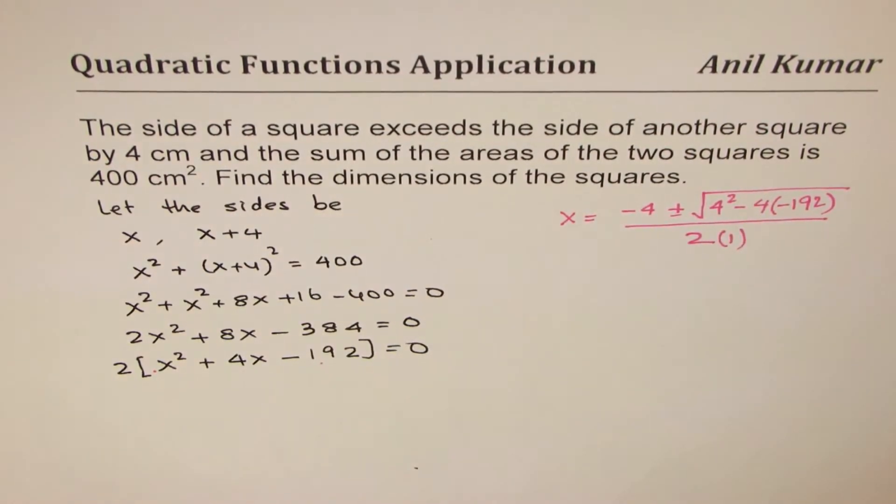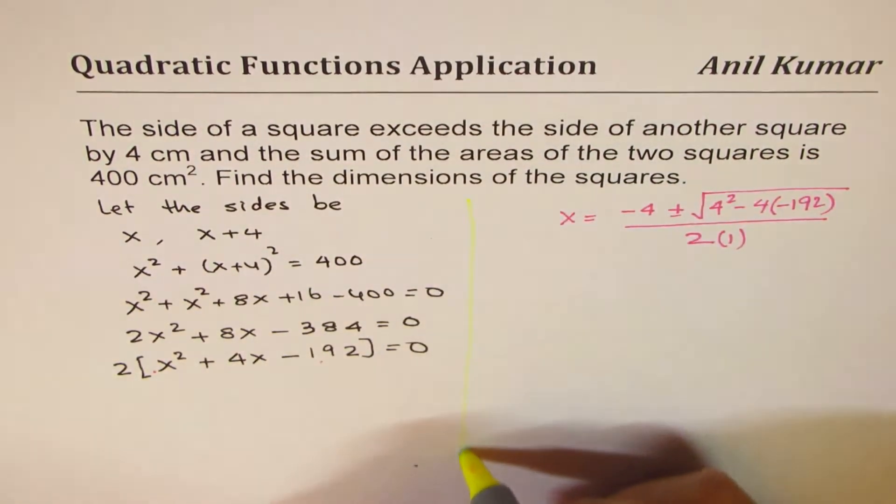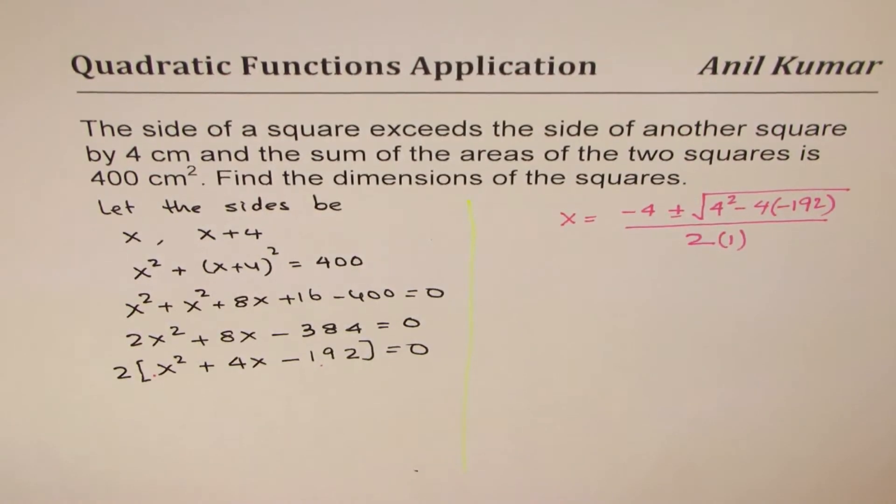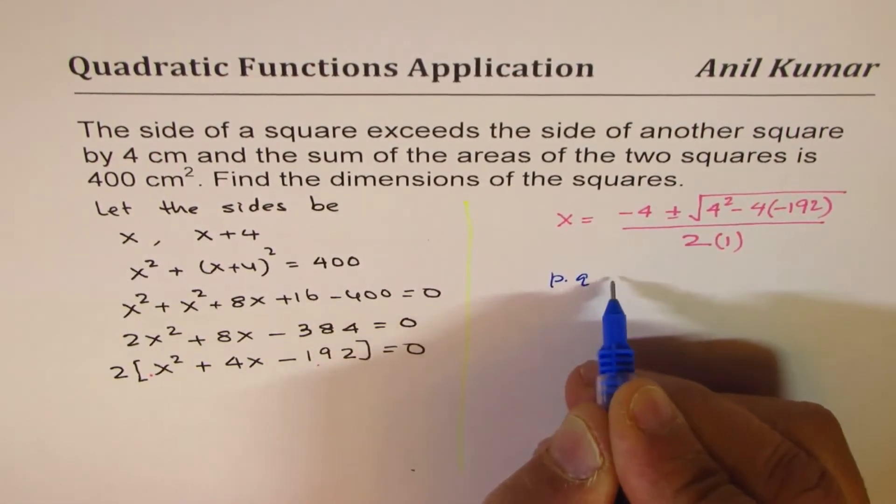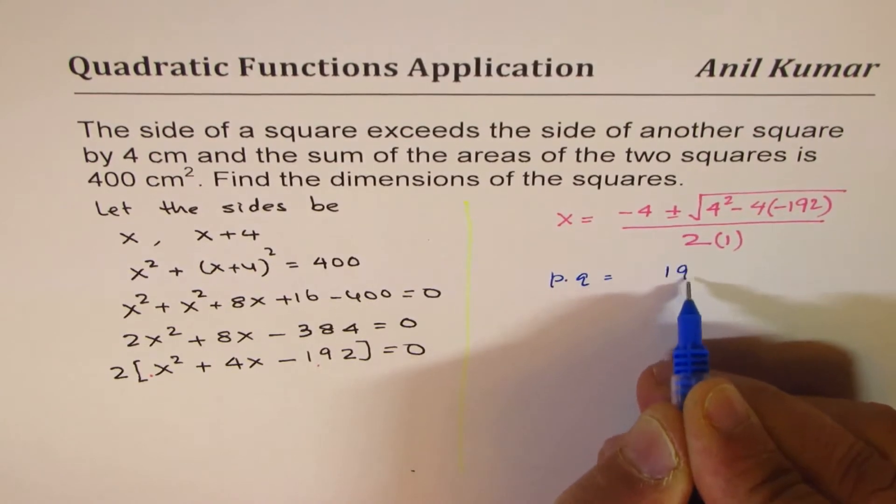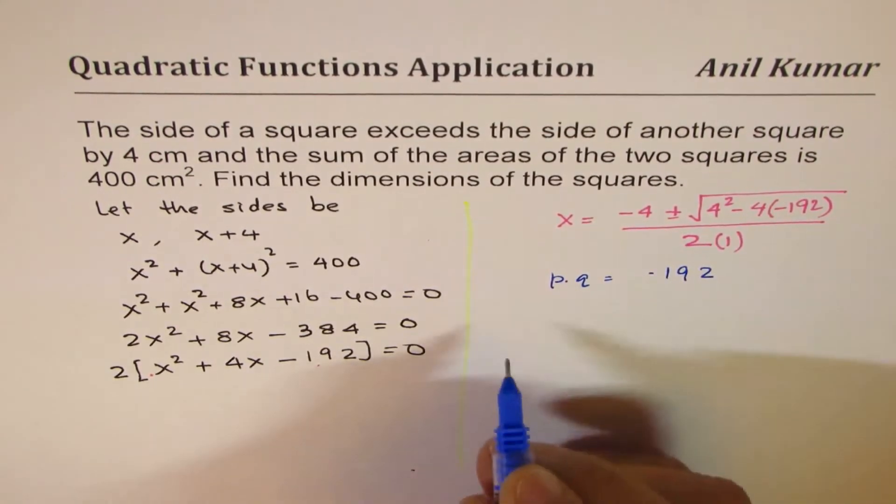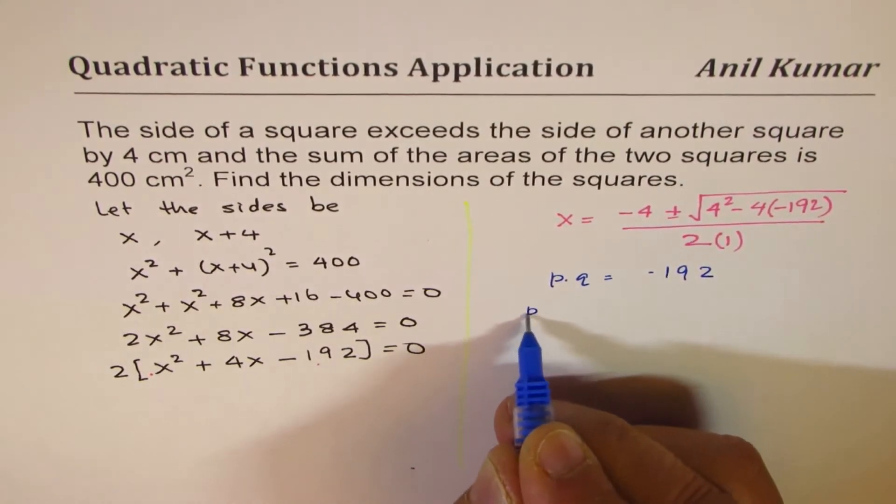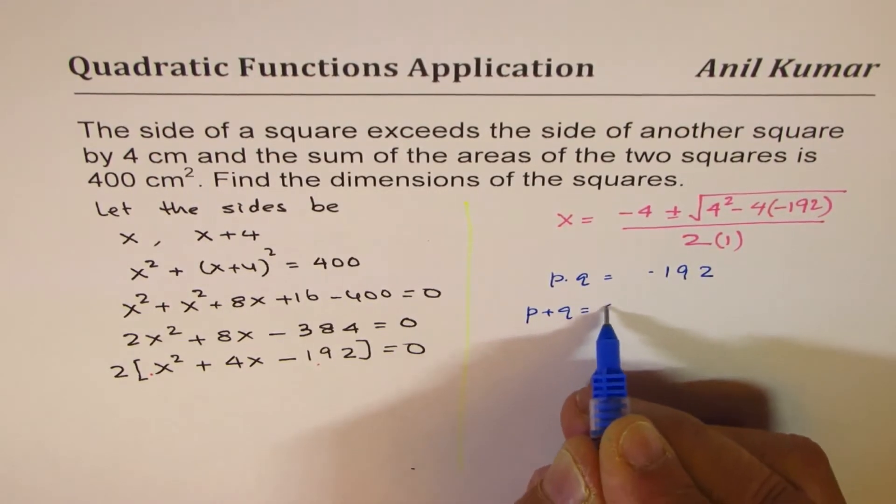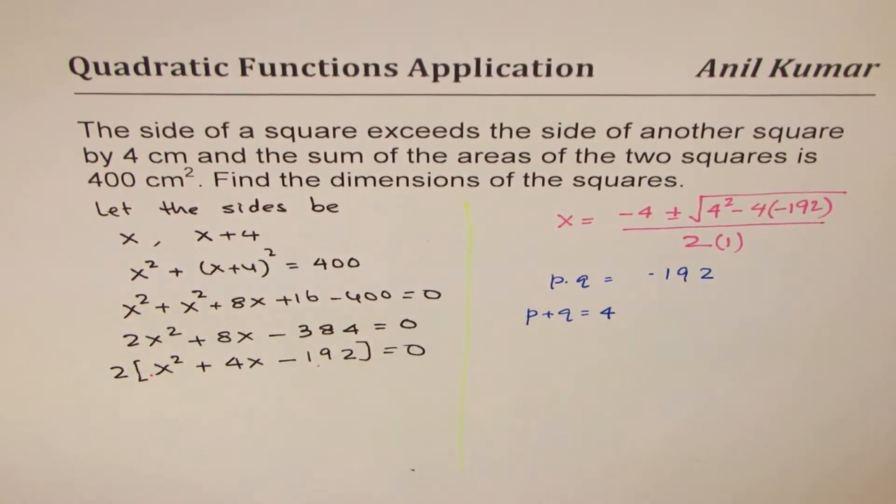You could also factor. I like to show you how to factor with big numbers. So what we are looking for is the product of two numbers to be -192 and the sum p + q should be 4.